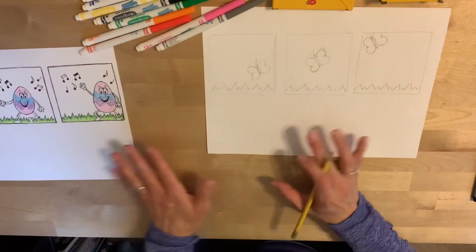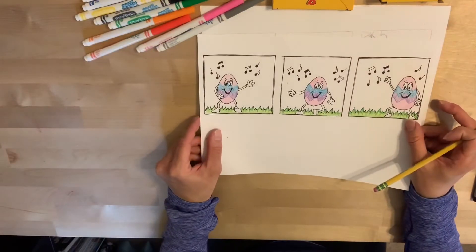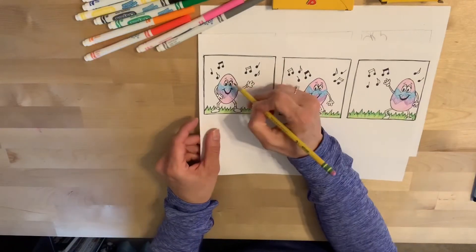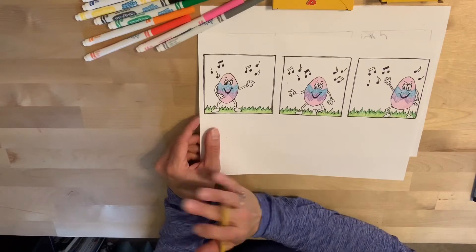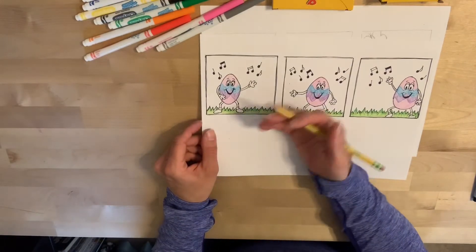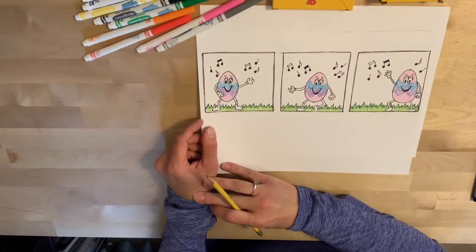Now a lot of times comic strips will have words in them. You can see I opted not to put any words in mine. If you want to try and put some words in, you can add a little speech bubble and draw some words in there, or write some words in there. You don't have to though, sometimes you can get your idea across just by drawing a couple little lines, like I drew the music notes. So we get the idea that the Easter egg is dancing.